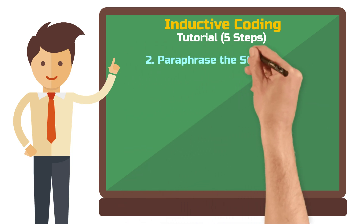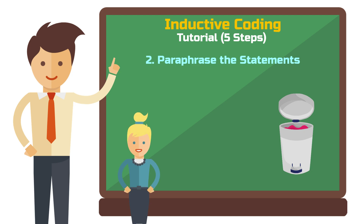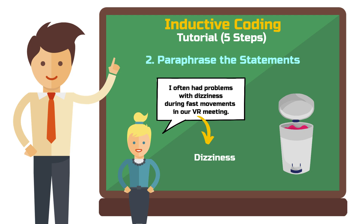Step two: Paraphrase the statements. This means cleaning up the statements from unnecessary details and writing them down clearly. In our example, it could look like this: from 'I often have problems with dizziness during fast movements in our VR meeting,' you make 'dizziness during fast movements.' This is also sometimes referred to as reduction.